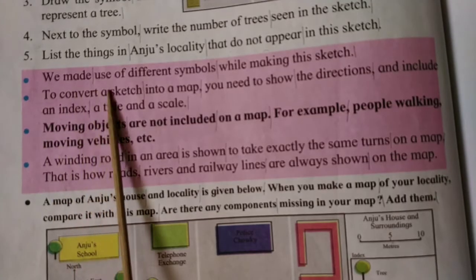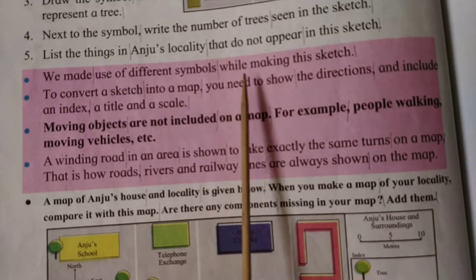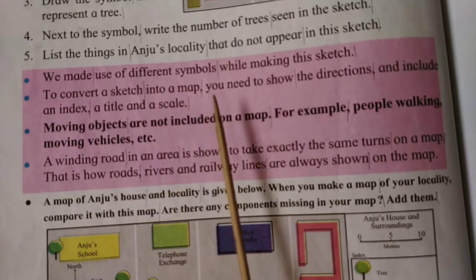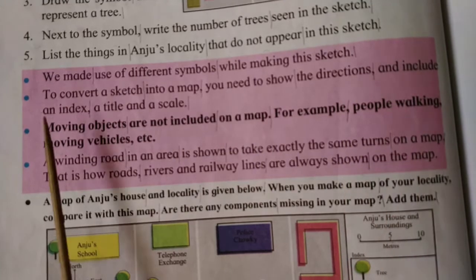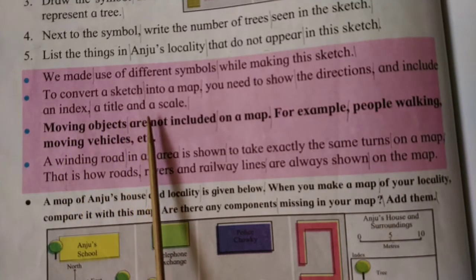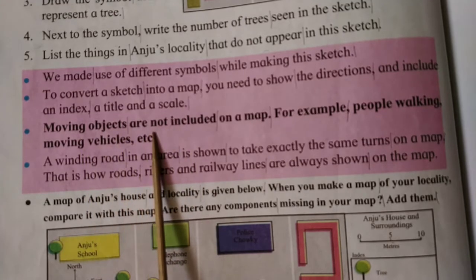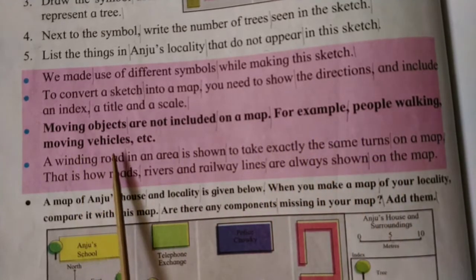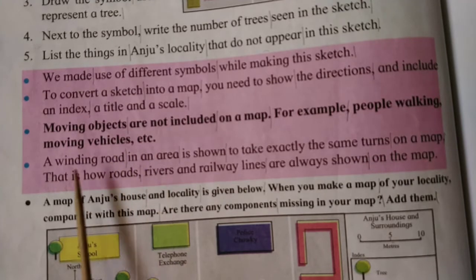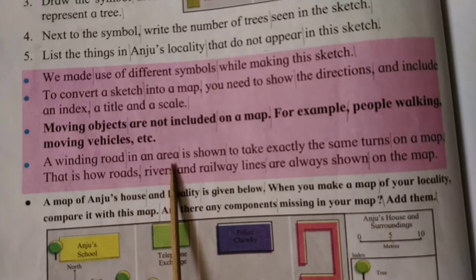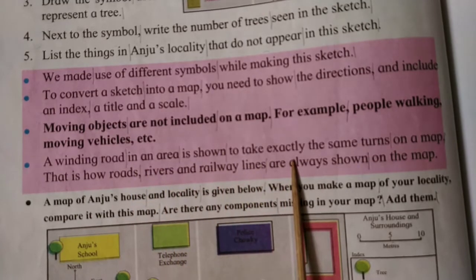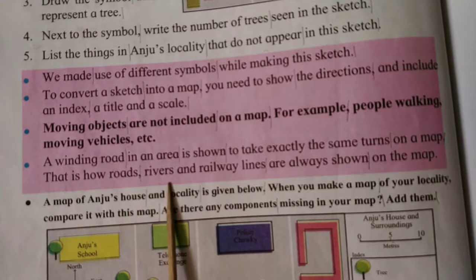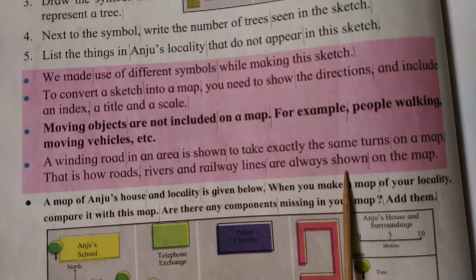We made use of different symbols while making this sketch. To convert a sketch into a map, you need to show the directions and to include an index, a title, and a scale. Moving objects are not included on a map — for example, people walking, moving vehicles, etc. A winding road in an area is shown to take exactly the same turns on a map. That is how roads, rivers, and railway lines are also shown on the map.